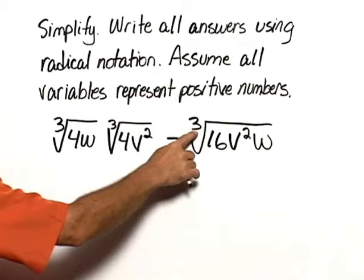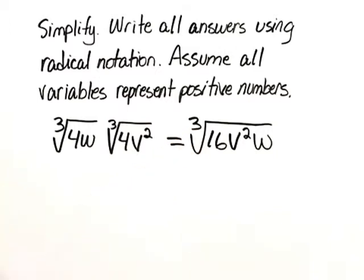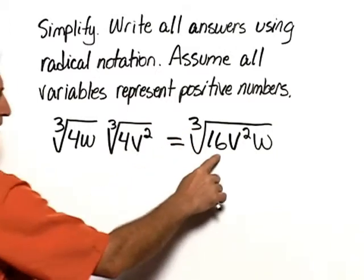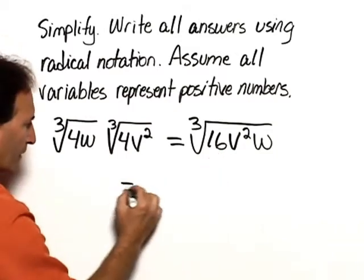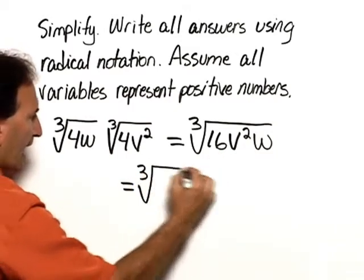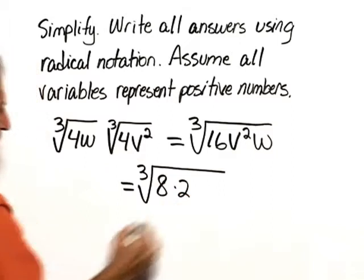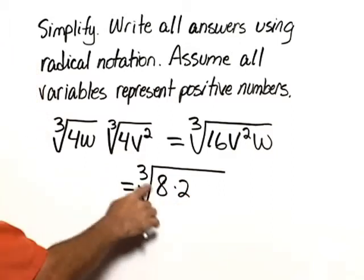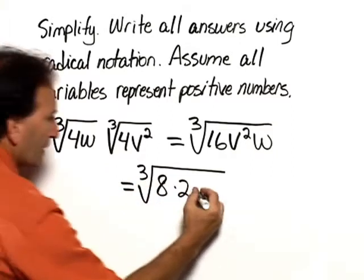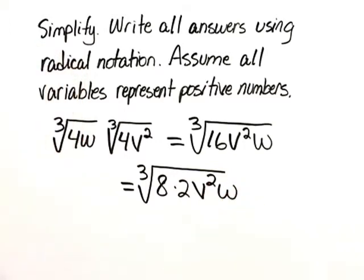Since we have a cube root, we're looking to rewrite this in any fashion that has perfect cubes. For example 16, we can write that as 8 times 2, 8 being a perfect cube. Then the v squared and w remain as is.